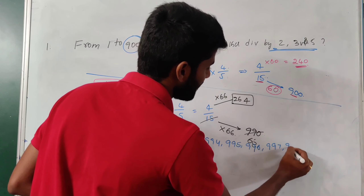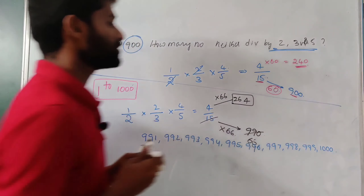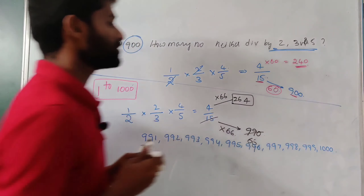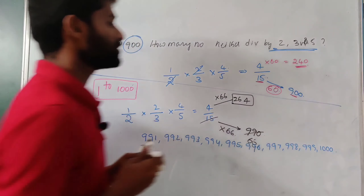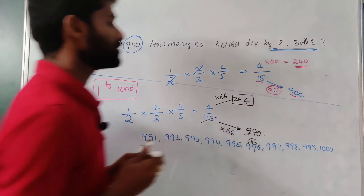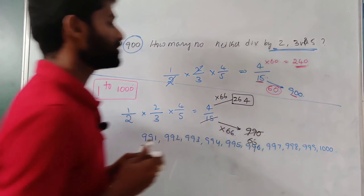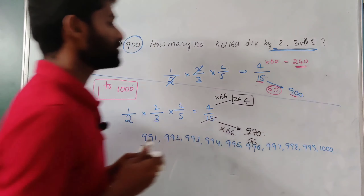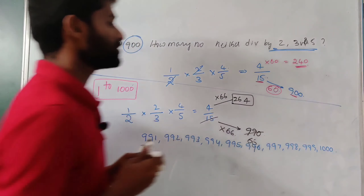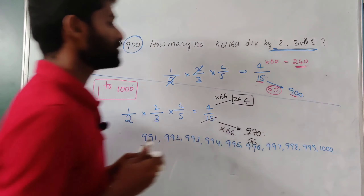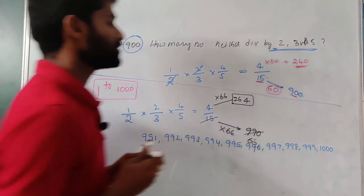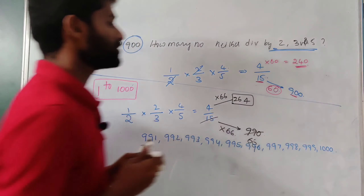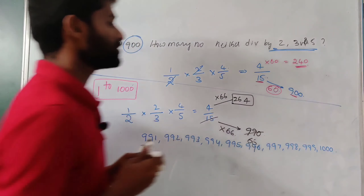From 1 to 900, how many numbers are not divisible by 2, 3, or 5? Fraction for not divisible by 2: 1/2. For 3: 2/3. For 5: 4/5. Combined fraction: (1/2) times (2/3) times (4/5) equals 4/15. Since 900 is exactly divisible by 15: 15 times 60 equals 900, so 4 times 60 equals 240. From 1 to 900, there are 240 numbers not divisible by 2, 3, or 5.